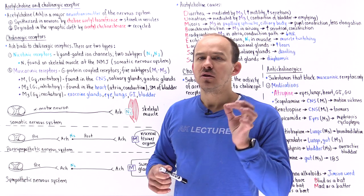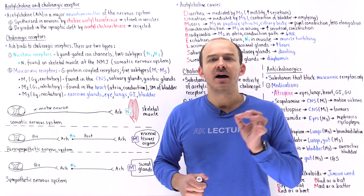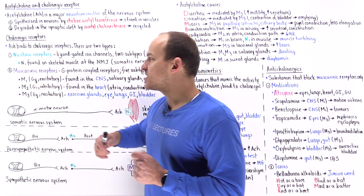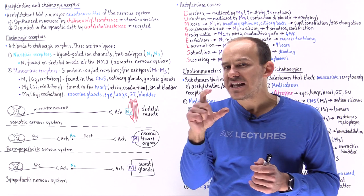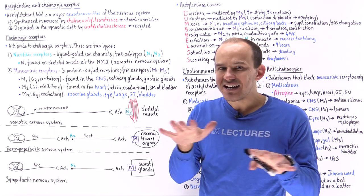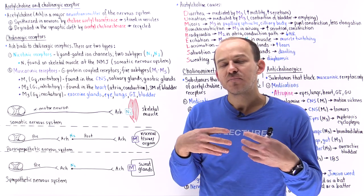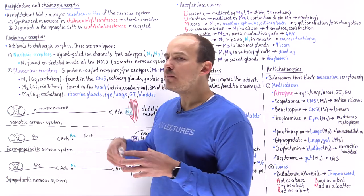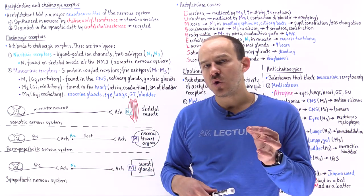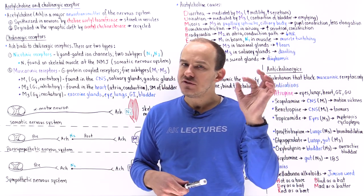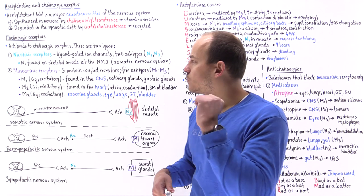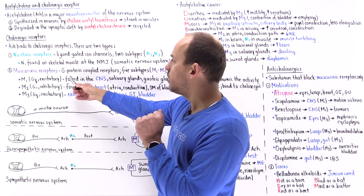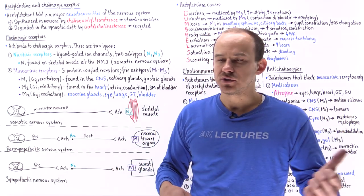What's the difference between these two receptors? Nicotinic receptors are ligand-gated ion channels. In contrast, muscarinic receptors are transmembrane proteins — not ion channels — that are coupled to a G-protein on the intracellular side. So we call them G-protein-coupled receptors.